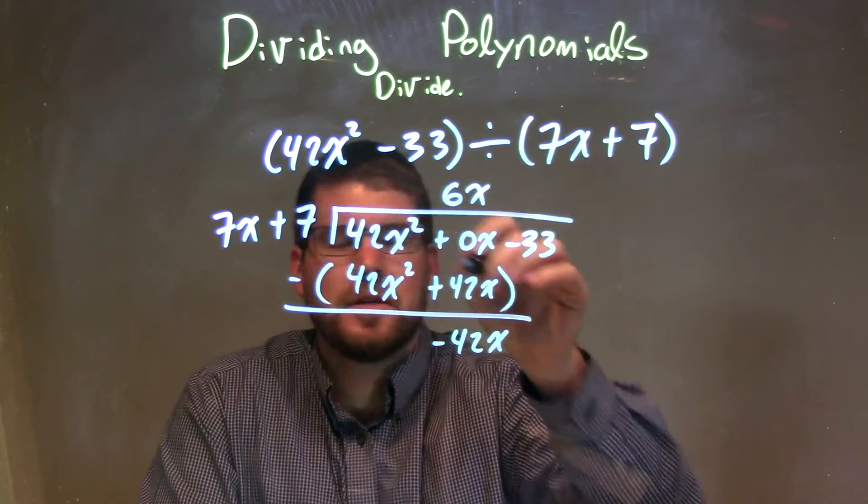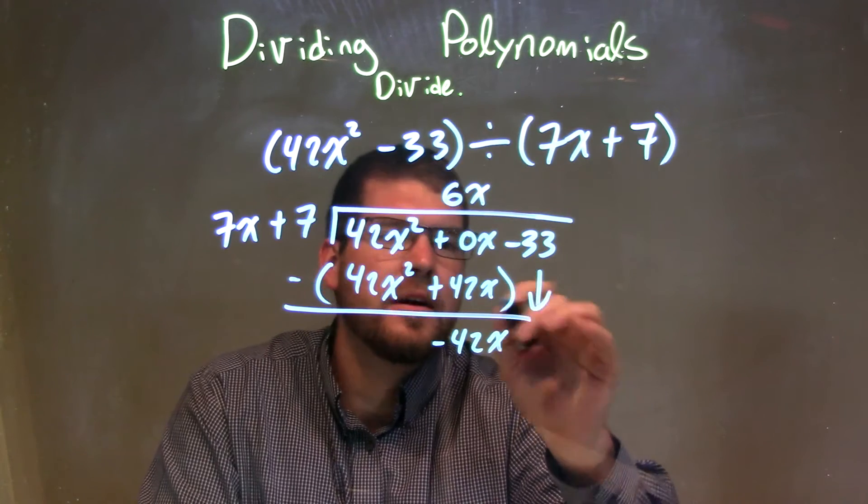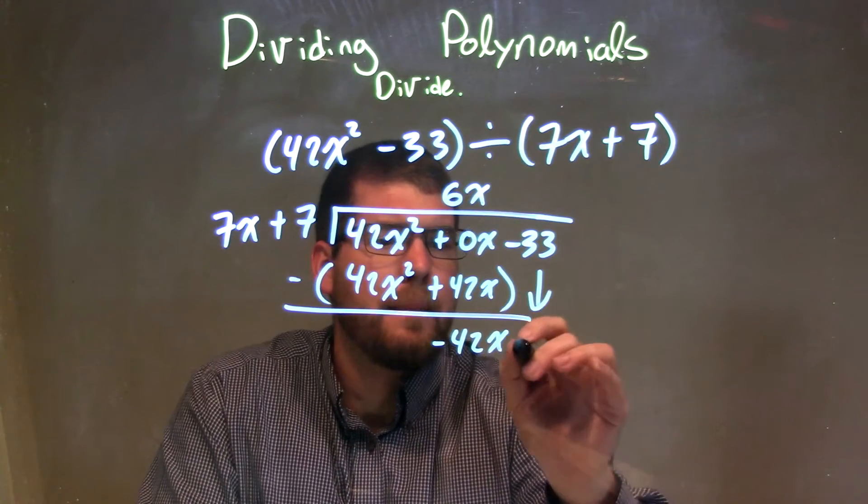So I changed my mind. 0x should go right there. It does look nicer, I think, in these videos. But anyway, minus 33 comes down.